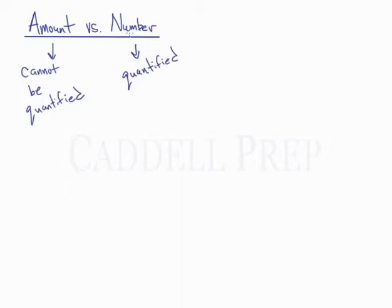What does this mean? This means we can actually assign a number to it. So we use number if we can assign a number, and we use amount if we can't assign a number. So let's look at some examples.